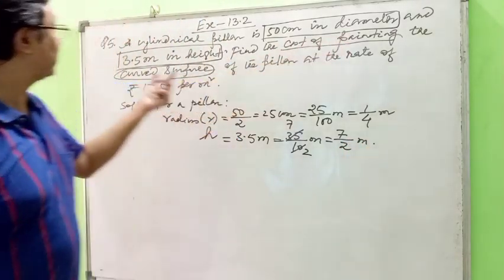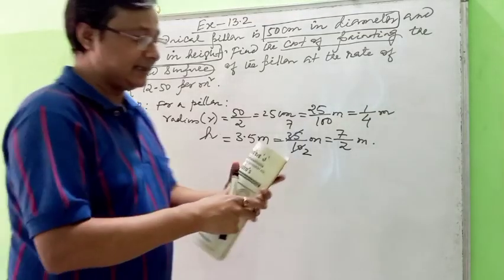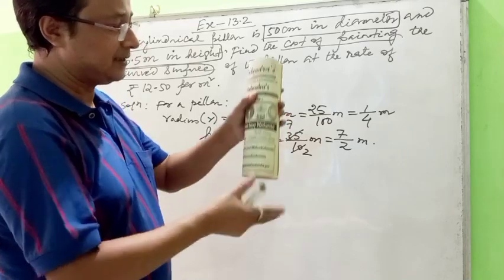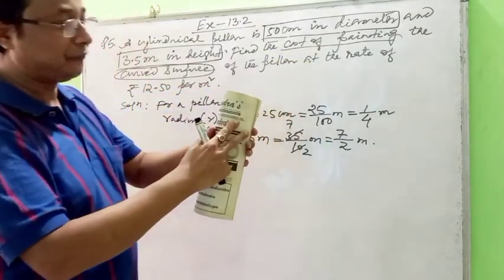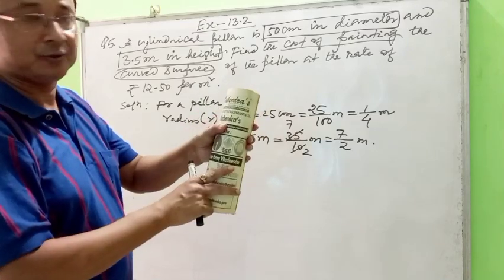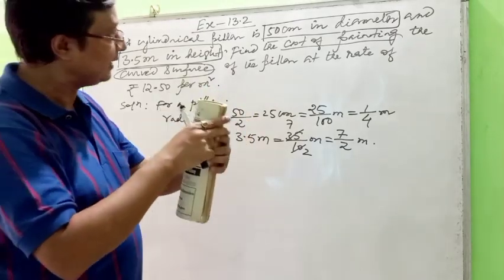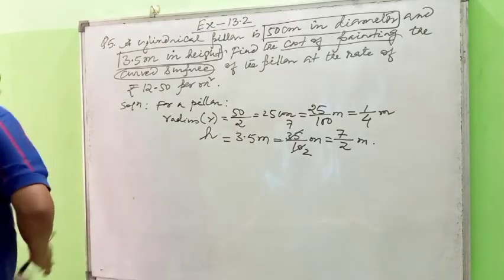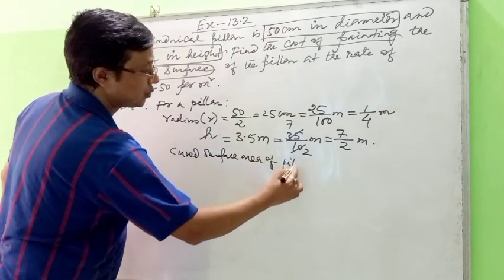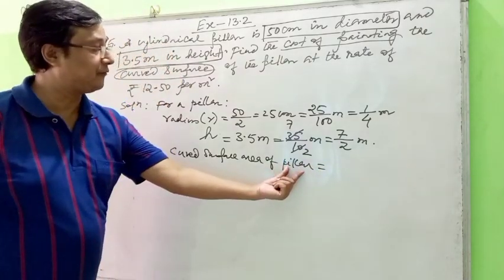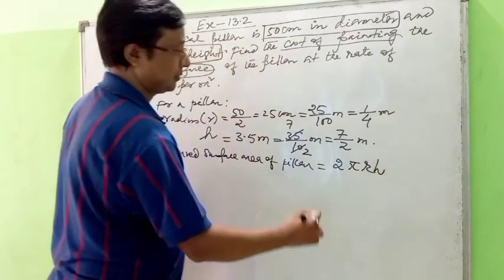We have to find the cost of painting the curved surface, so we are going to paint only the curved surface of this pillar. Before finding the cost, we first need to find how much area is there — that is, the curved surface area of the pillar. We use the formula for a cylinder: curved surface area equals 2πrh.